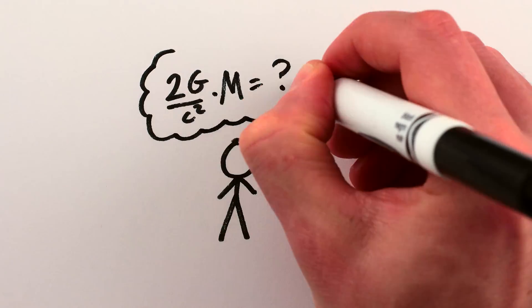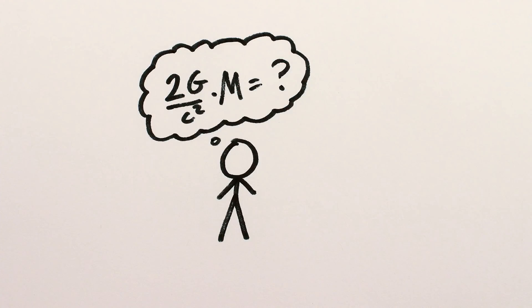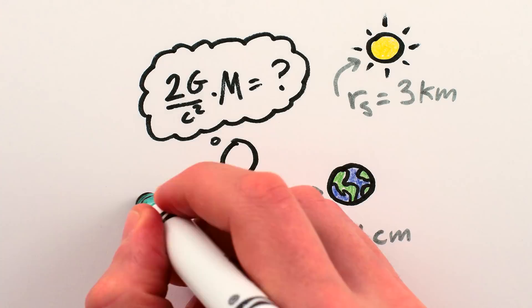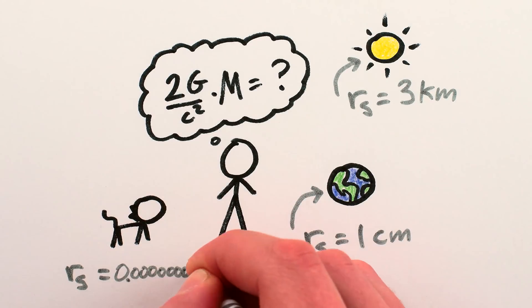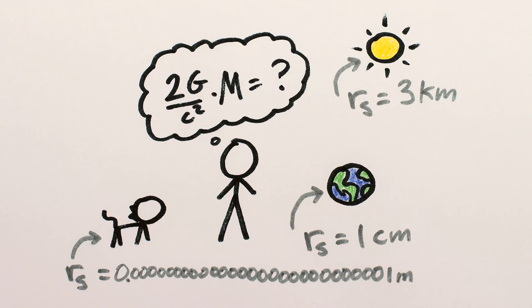Now, let's just blindly use this equation to start calculating Schwarzschild radii for other objects. The Schwarzschild radius of the Sun is about 3 kilometers, the Schwarzschild radius of the Earth is about 1 centimeter, and the Schwarzschild radius of a cat is about 0.01 yoctometers.